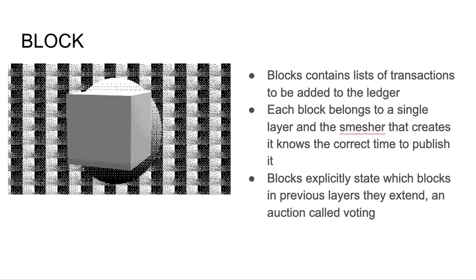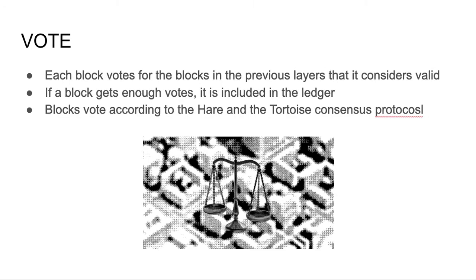Blocks contain lists of transactions to be added to the ledger and additional data to achieve consensus. Each block belongs to a single layer, and the Smesher that creates it knows the correct time to publish it. Blocks explicitly state which blocks in previous layers they extend — an action called voting. Each block votes for the blocks in previous layers that the Smesher considers valid. If a block gets enough votes, it's included in the ledger. Block votes according to the HARE and TORTOISE consensus protocols.